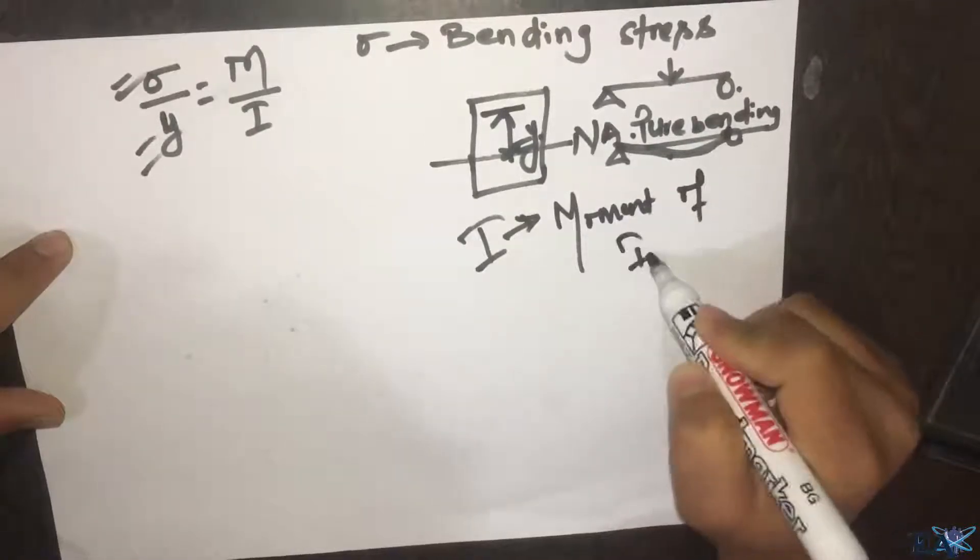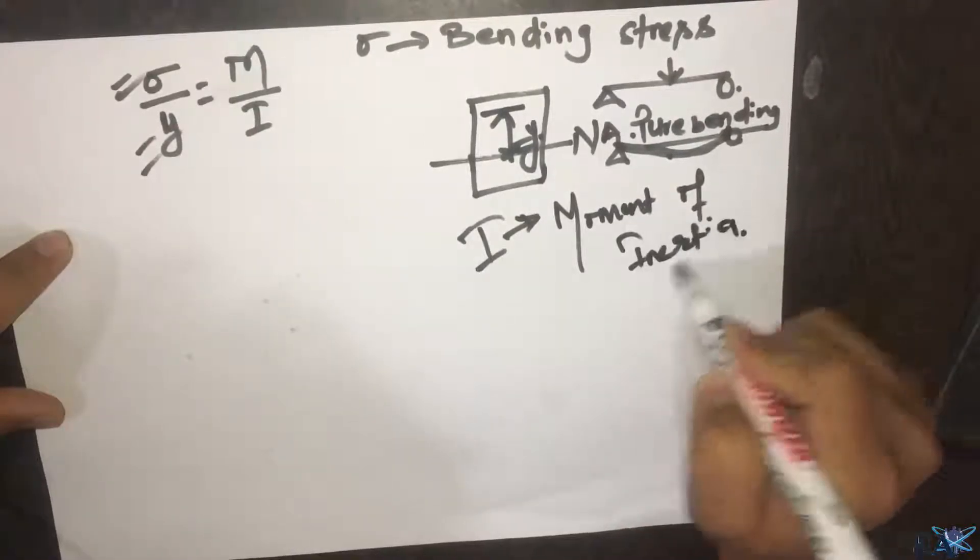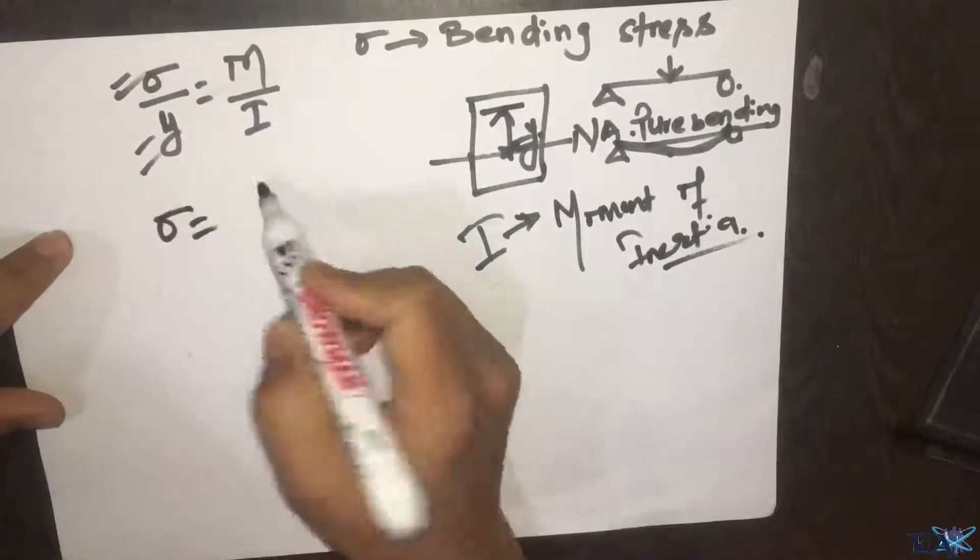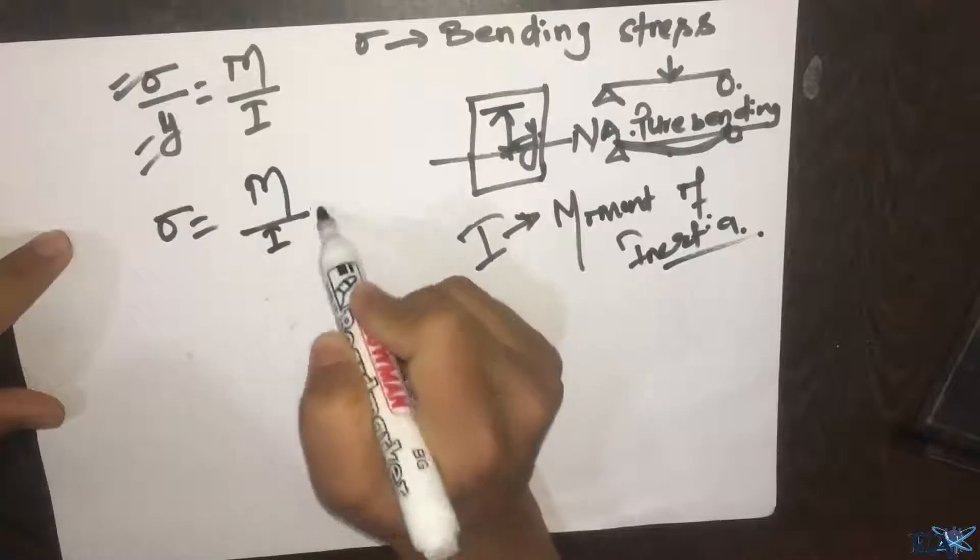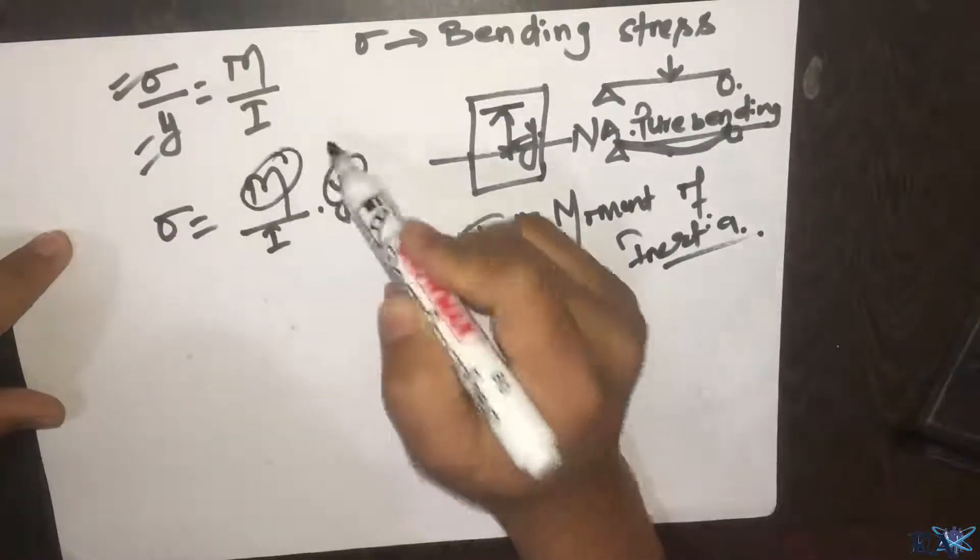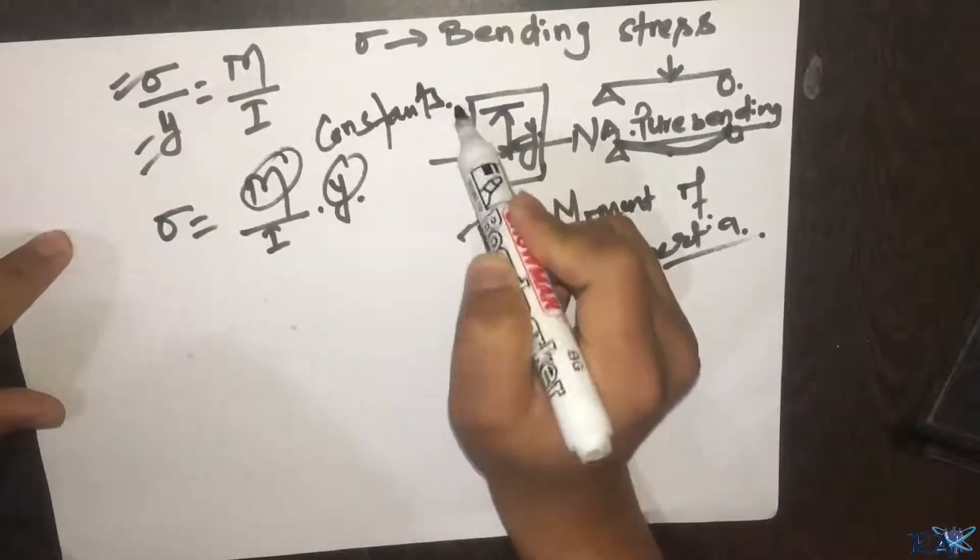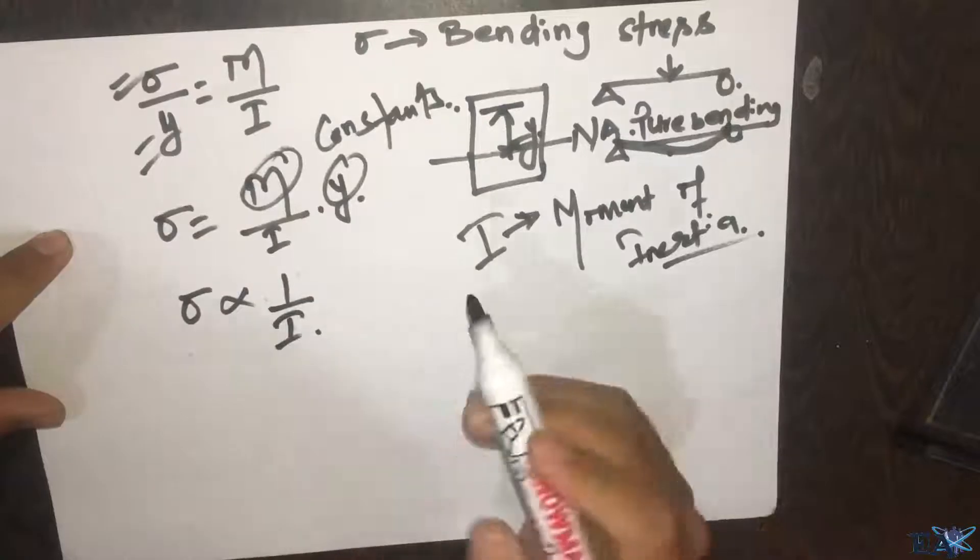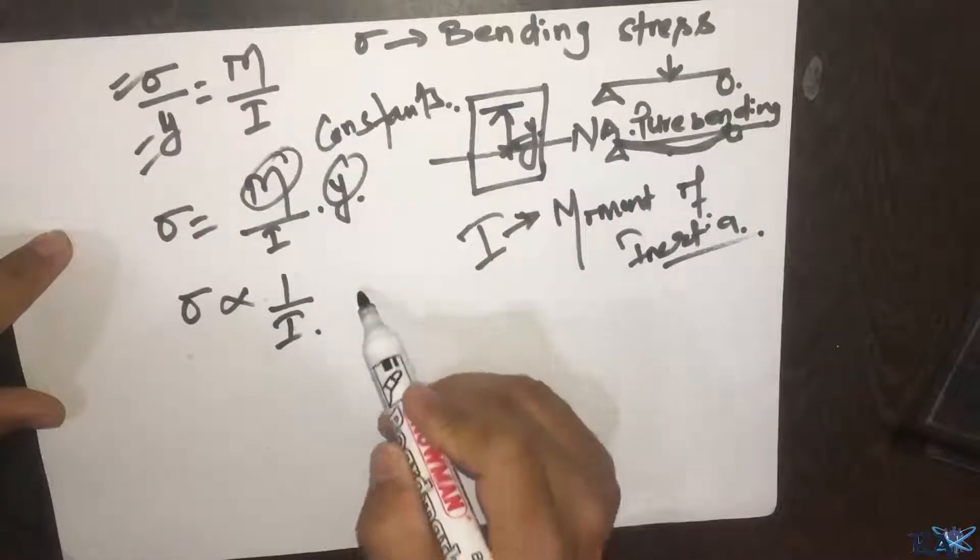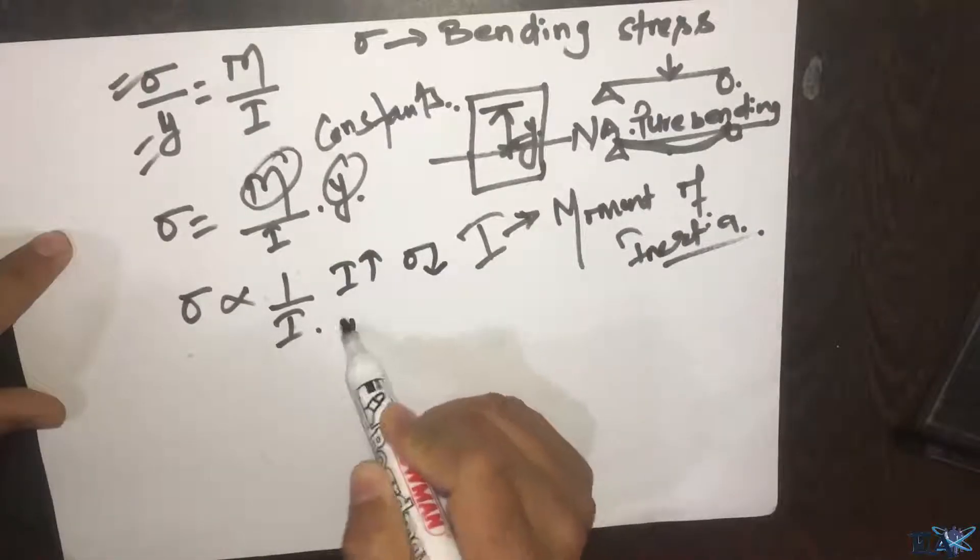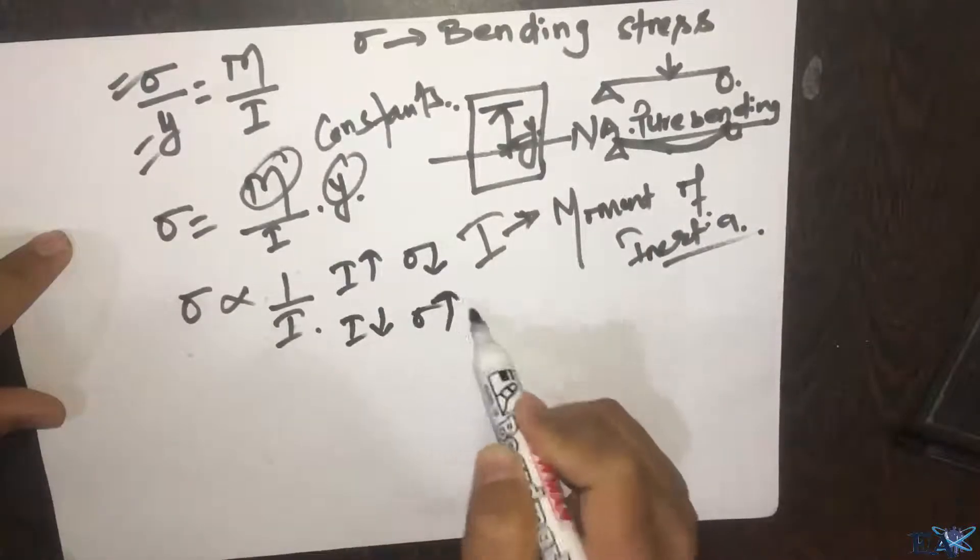From here we get σ = M/I × Y. If we consider M and Y as constant, then σ is inversely proportional to 1/I. This means if I increases, σ decreases, and if I decreases, σ increases.